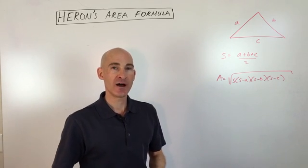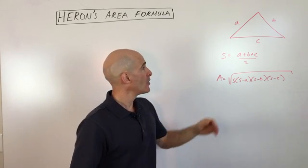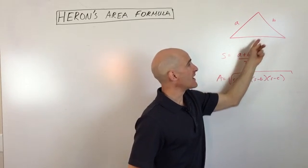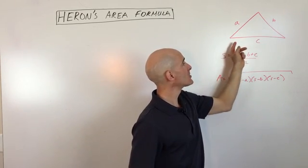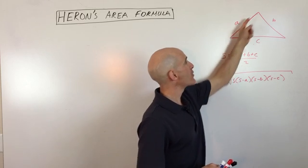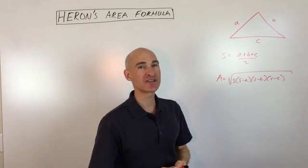This is a way of finding area for a triangle when they only give you three side lengths. They don't give you any angles, they don't give you the height of the triangle, they just give you the three sides. That's when we can use Heron's area formula.